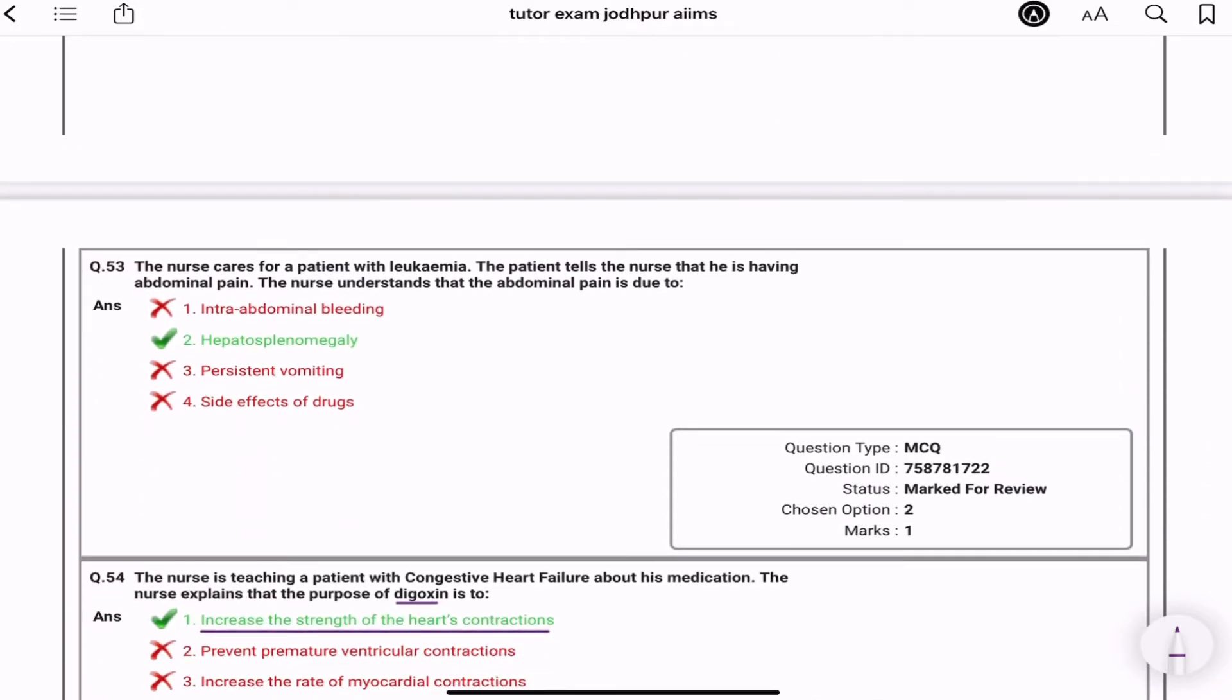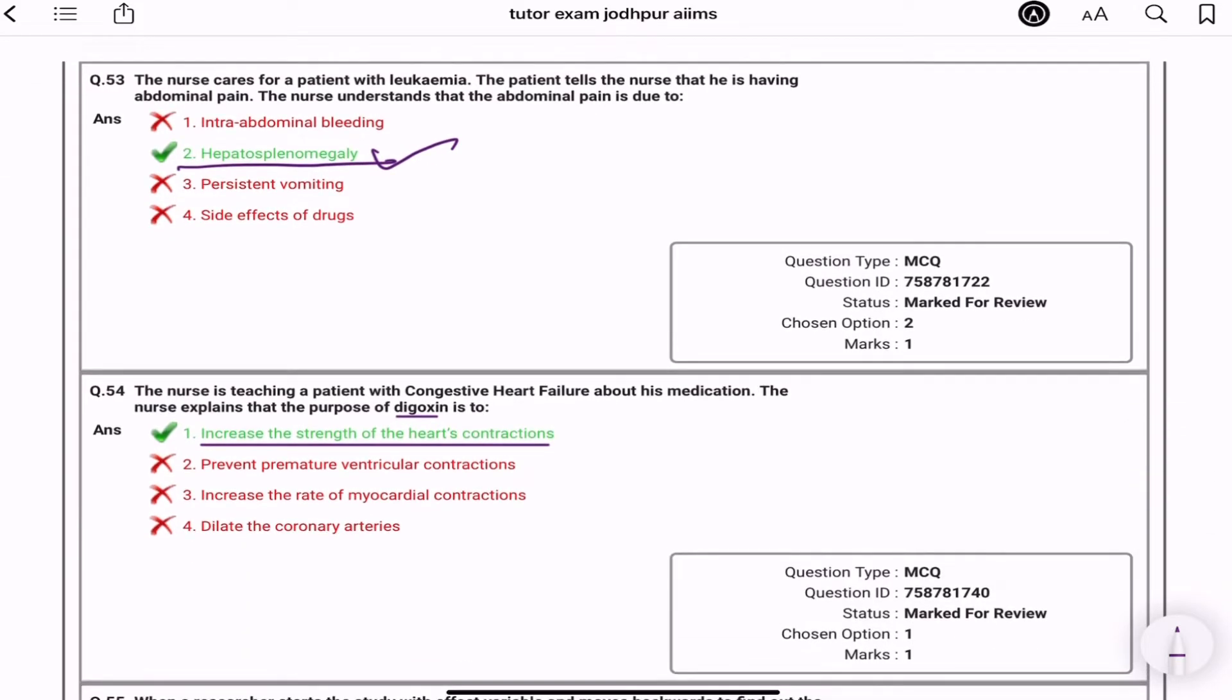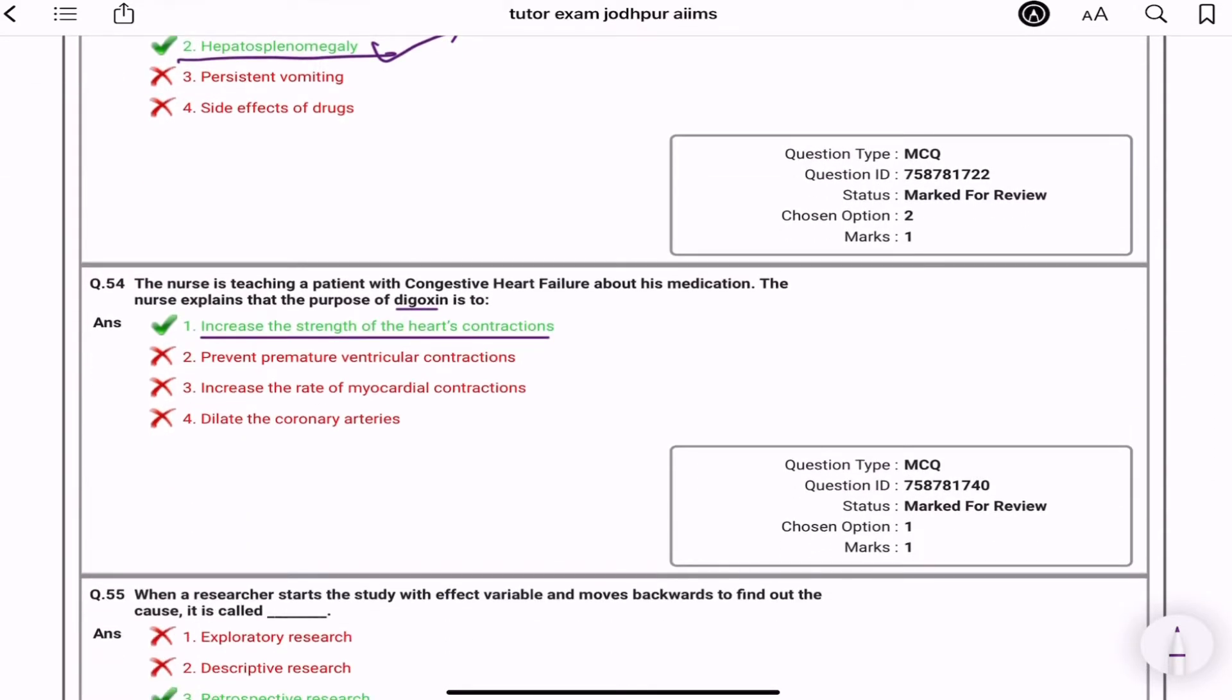The nurse care for a patient with leukemia. The patient tells the nurse that he is having abdominal pain. The nurse understand the abdominal pain is due to what? Splenomegaly. Next is the nurse is teaching patient with CHF about his medication. The nurse explains that the purpose of digoxin is to increase the strength of the heart contraction. Kya hai? Inotropic agent, positive inotropic agent, cardiac glycosides bhi bolta hai. Iska antidote kya hai? Digifab.